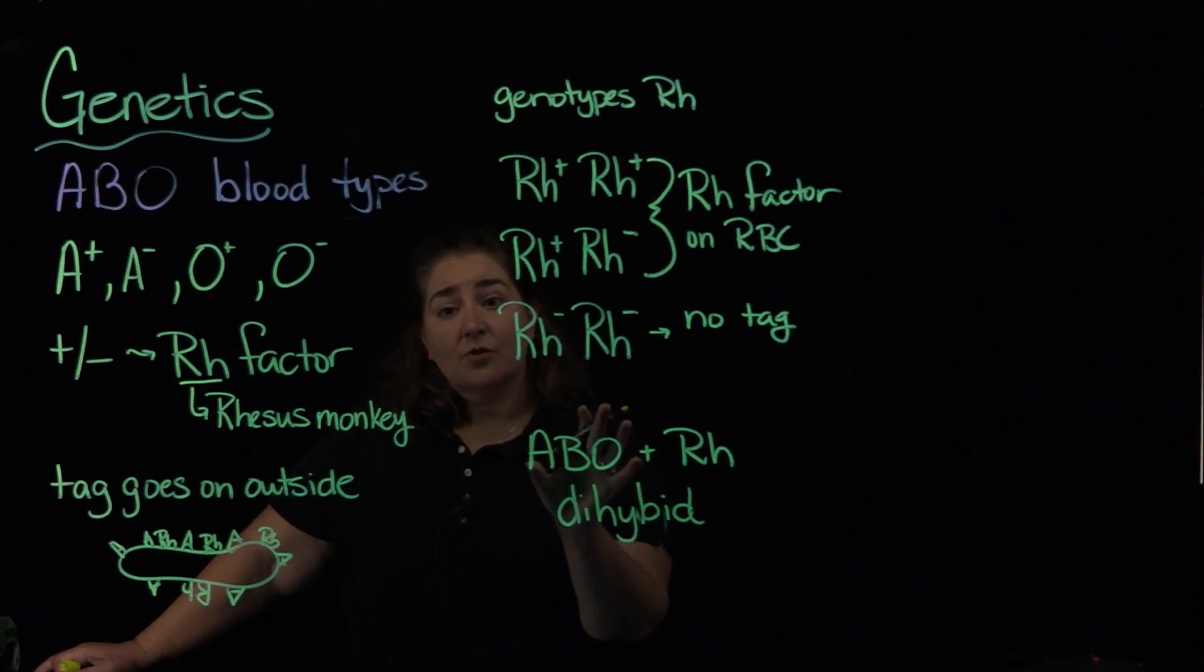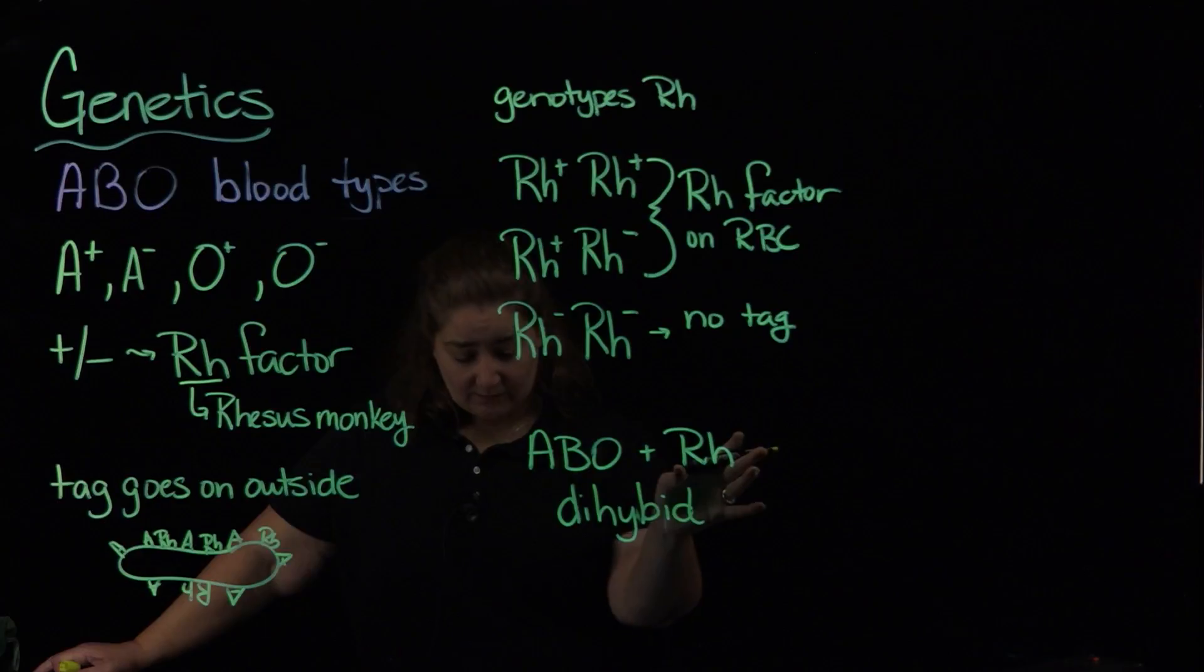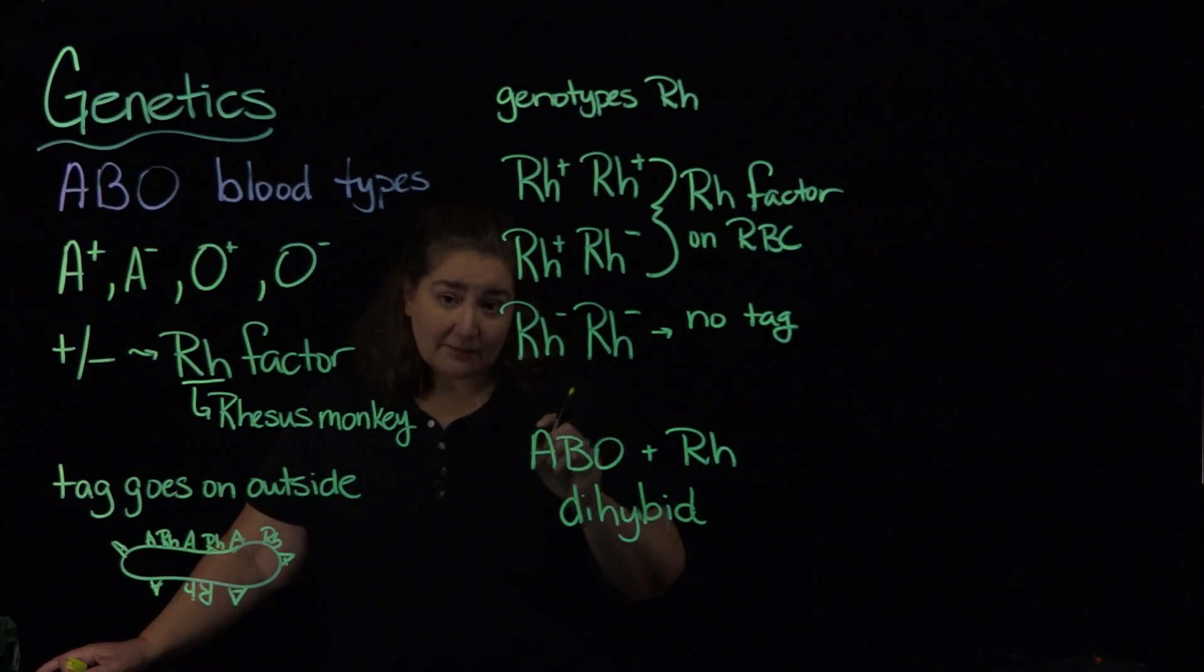Because each individual has to carry or has to inherit an allele of ABO and they have to inherit the Rh factor. So keep that in mind.